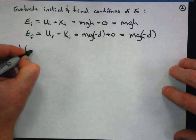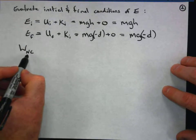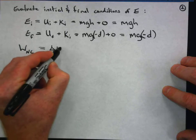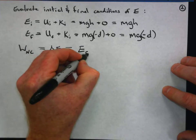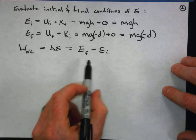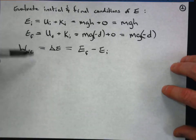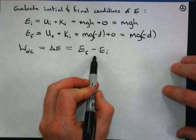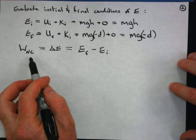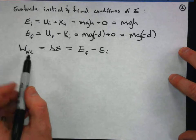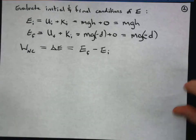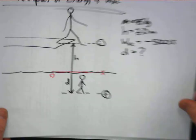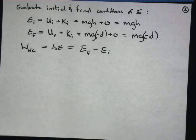The relationship we want to use is that the work done by non-conservative forces equals the change in total mechanical energy — that is, final minus initial. We evaluated our initial and final conditions so we can look at this difference. Since we know the amount of non-conservative work done, this relationship can tell us the unknown distance D, which appears in our final energy expression.